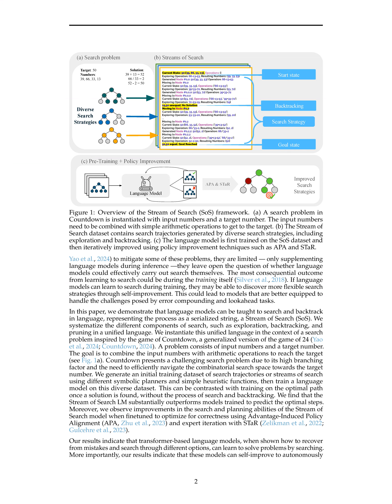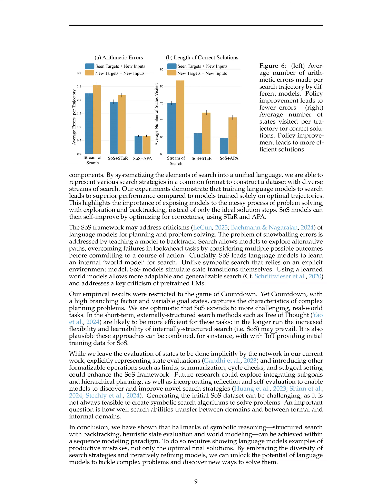How does the stream of search (SOS) framework contribute to improving the performance of language models in problem-solving tasks? The SOS framework teaches models to search and backtrack, allowing them to explore alternative paths and consider multiple possible outcomes before committing to a course of action. This helps address snowballing errors and difficulties in look-ahead tasks. By training on diverse streams of search trajectories, SOS enables models to learn from messy and sometimes unsuccessful search processes, leading to superior performance compared to models trained solely on optimal solutions. SOS also allows language models to self-improve using techniques like Advantage-Induced Policy Alignment (APA) and Expert Iteration with STAR.